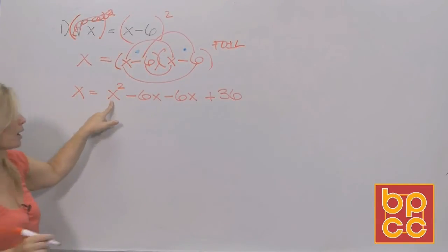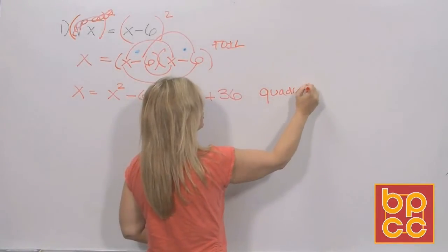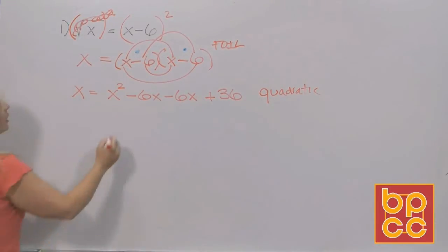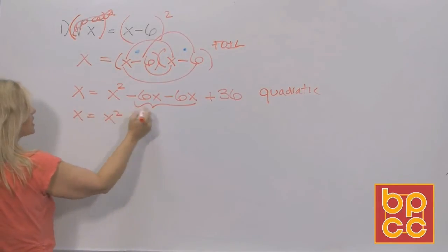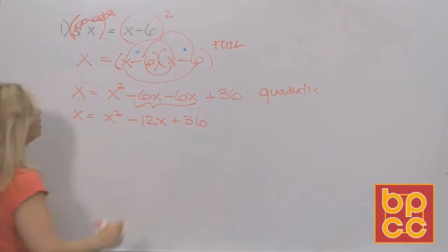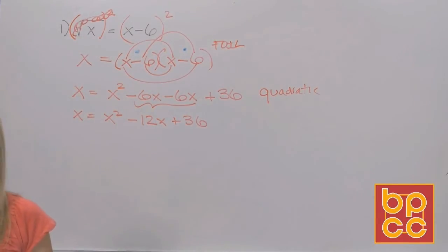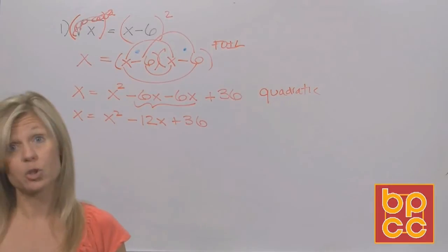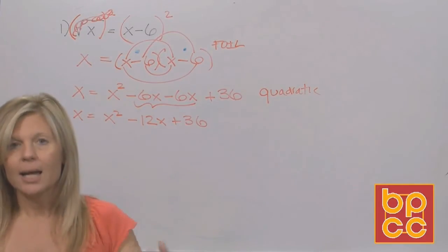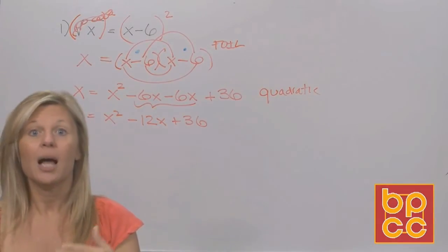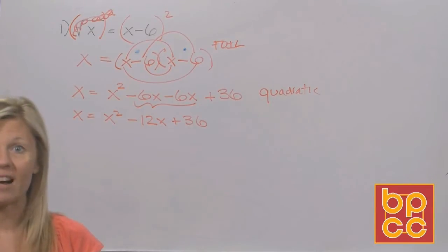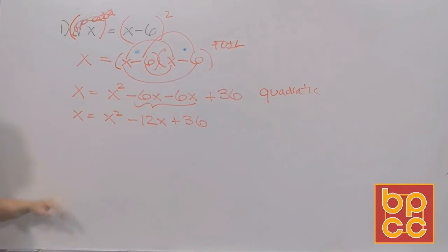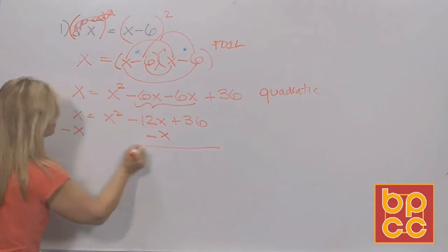This equation now has an x squared, so it's a quadratic equation. Our first instinct says to collect like terms: negative 6x and negative 6x add to negative 12x. Because this is a quadratic, you have a decision — factor it, use the square root method, complete the square, or the quadratic formula. I always go with the easiest method, and most quadratics can factor. But to factor they have to be set equal to zero, so we're going to move the x by subtracting.